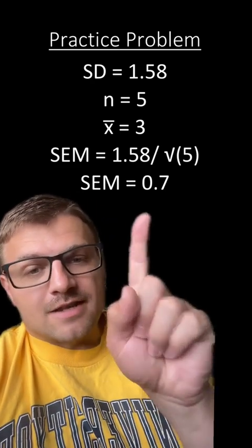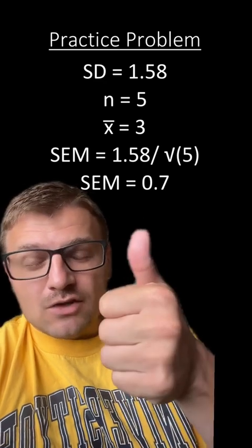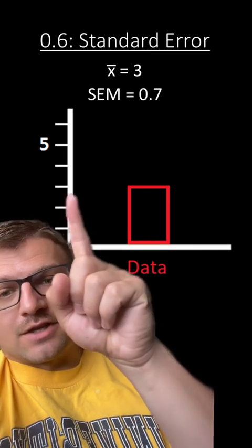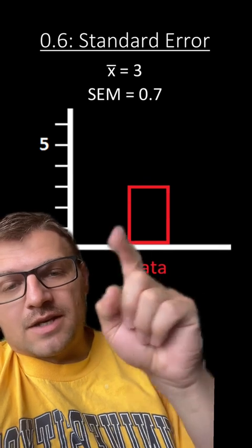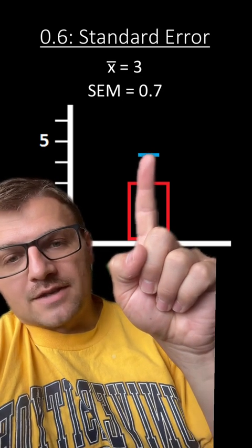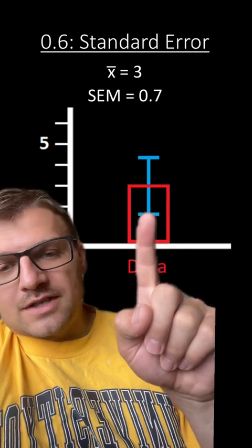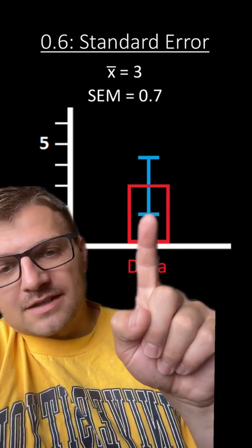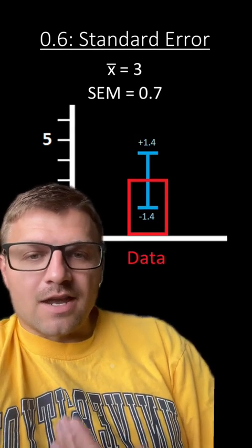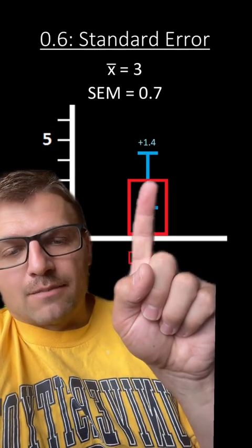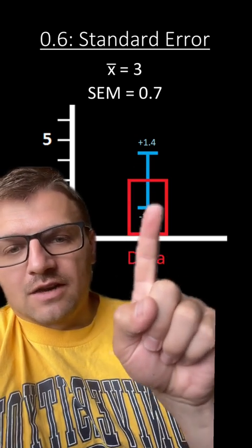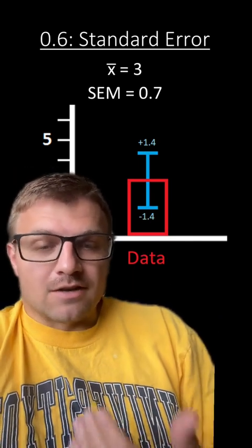Now remember, when we graph this standard error of the mean, we have to graph two of them in the positive direction and two of them in the negative direction. So again, we have our data. Our average is 3. You can see that we graphed it here, and our standard error of the mean is 0.7. So what we're going to do is we're going to go up 0.7 and go up another 0.7. We're going to make our bar-headed line, and we're going to do the same for the negative direction. We're going to go down 0.7 and down another 0.7 and put our bar-headed line. That's going to show us the standard error of the mean for this data. You can see that we have a bar-headed line in the positive direction of 1.4 and a bar-headed line in the negative direction of 1.7. And that's all you have to do to graph standard error of the mean.